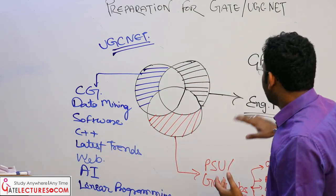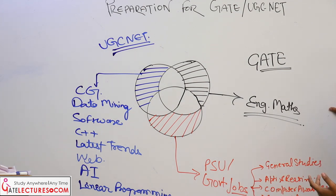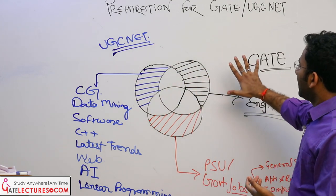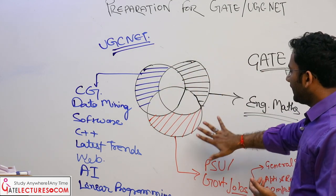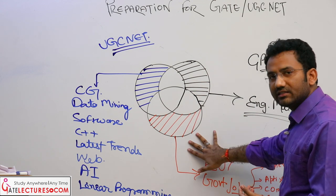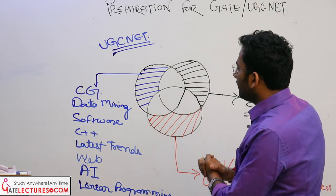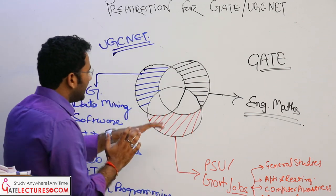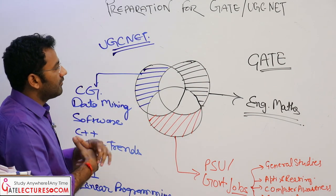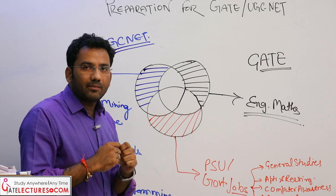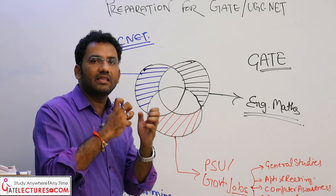So, in this Venn diagram, one portion is for UGC NET, one is for GATE, and one is for various government and PSU examinations. When we go through all these subjects, we can clearly say that every exam has something different in its syllabus.